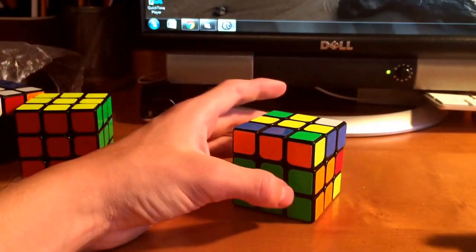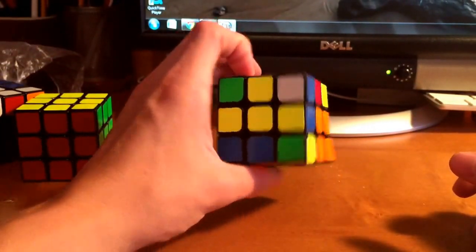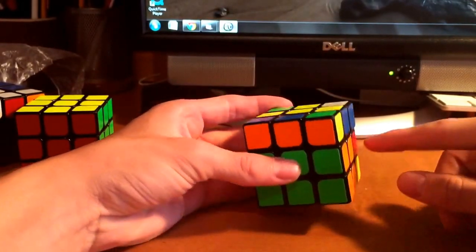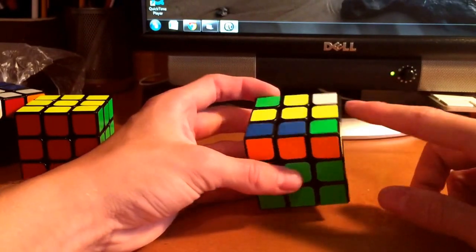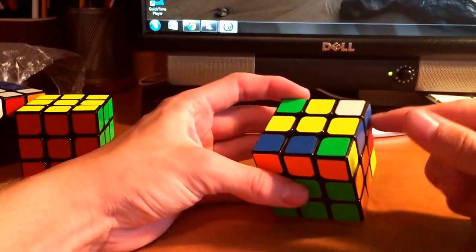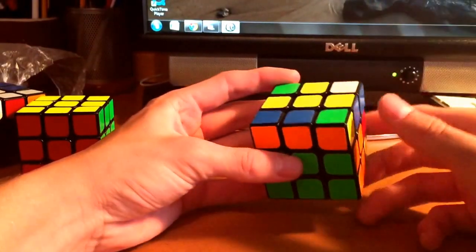And the final case is one that I have been doing incorrectly for a really long time, and it's basically how you recognize it, is you have this thing in the back, and then you have this edge here, and then you have this corner here with the blue, with the same color here as on top.